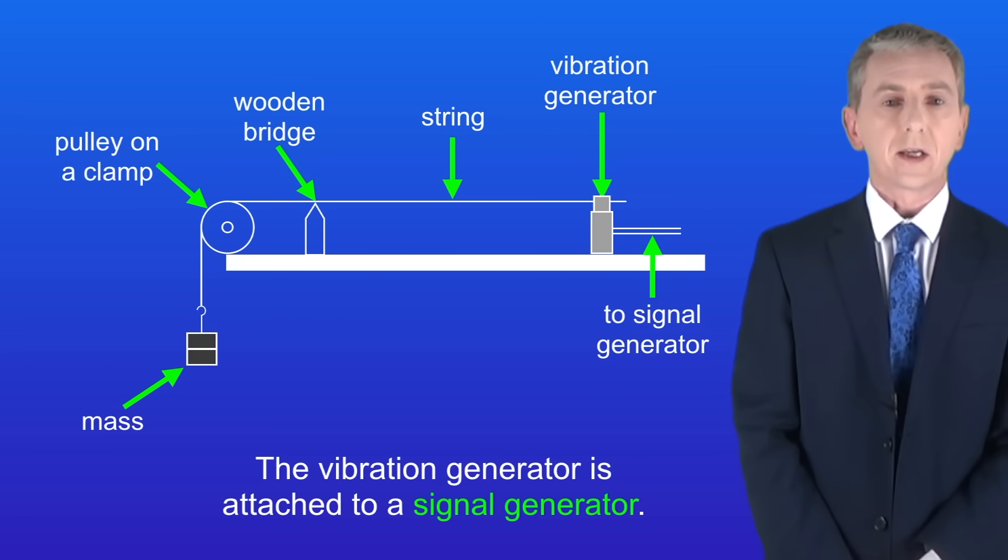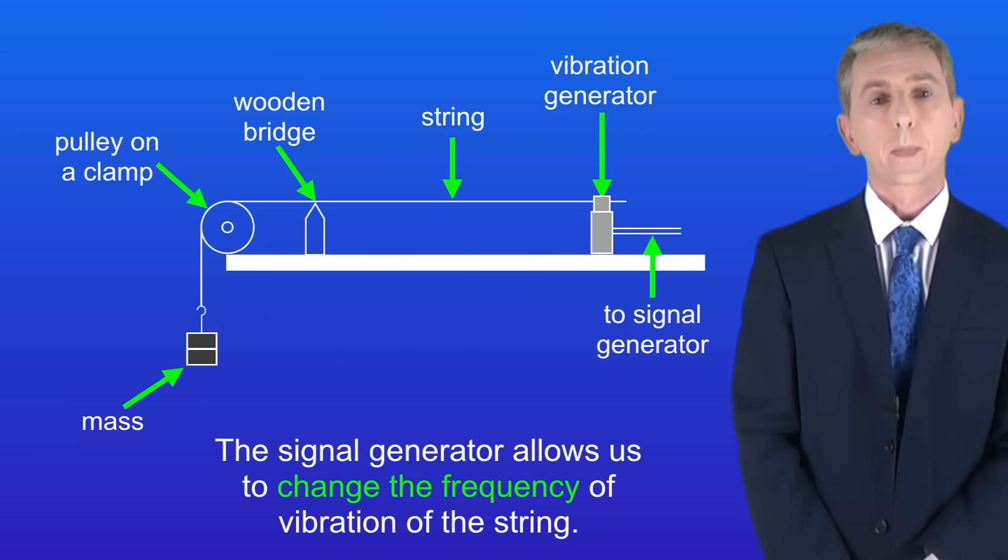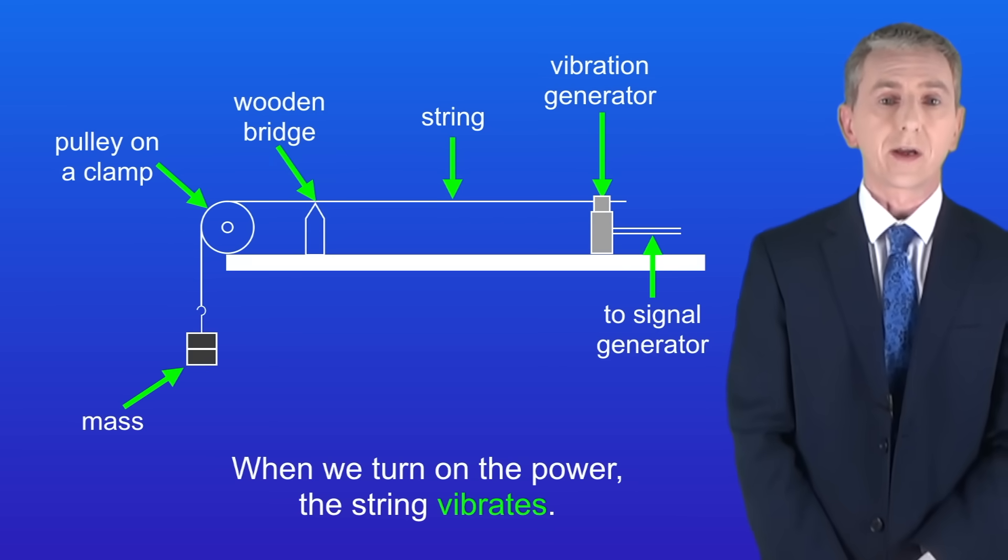The vibration generator is attached to a signal generator and the signal generator allows us to change the frequency of vibration of the string. So when we turn on the power the string vibrates.